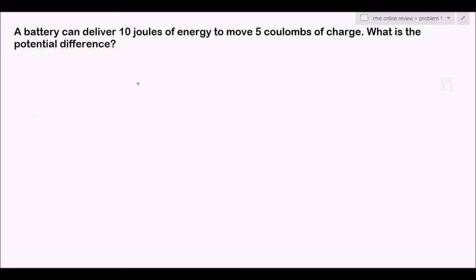Problem 1: A battery can deliver 10 joules of energy to move 5 coulombs of charge. What is the potential difference on the battery? Let's write our solution.